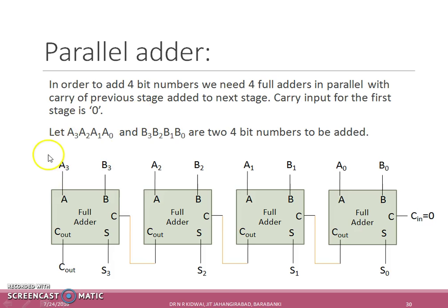For the two 4-bit numbers the arrangement is shown in this circuit diagram where C_in is equal to 0 at the first full adder stage and C_out of the first stage is applied to the carry input of second stage. In this way the 4-bit sum output is S3, S2, S1 and S0 and final carry output is C_out.